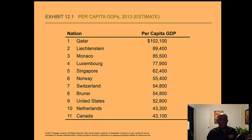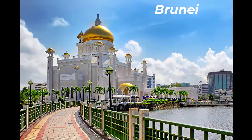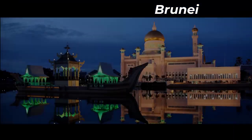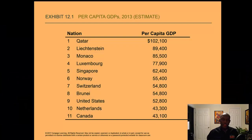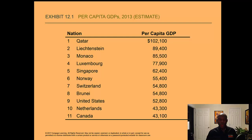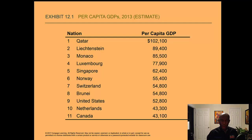Brunei, a Buddhist nation in Asia, is also on the list — at one point they had the richest man in the world. The United States comes in at number nine, followed by the Netherlands and Canada in the upper echelon of per capita GDP rankings.